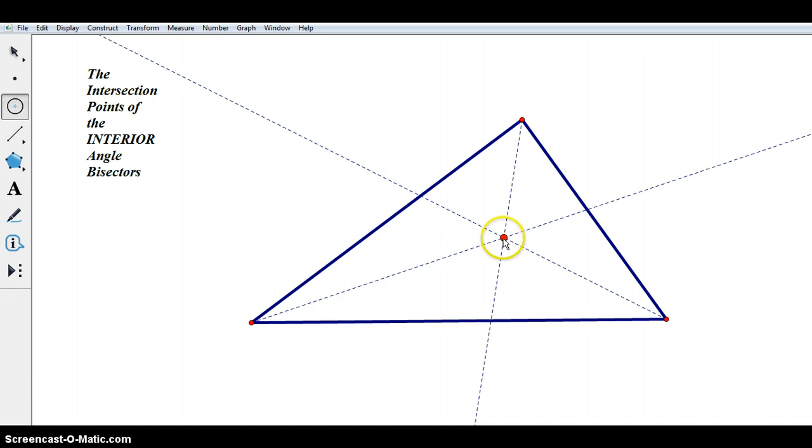What that means then, the kind of lovely result of that, is that if I draw a circle with the point of intersection as its center, that circle should then intersect those three sides like so. And we call this an inscribed circle. Let's just type that in. I'm going to drag it in. Inscribed circle. That makes sense, doesn't it? Let's just put that in and highlight it.